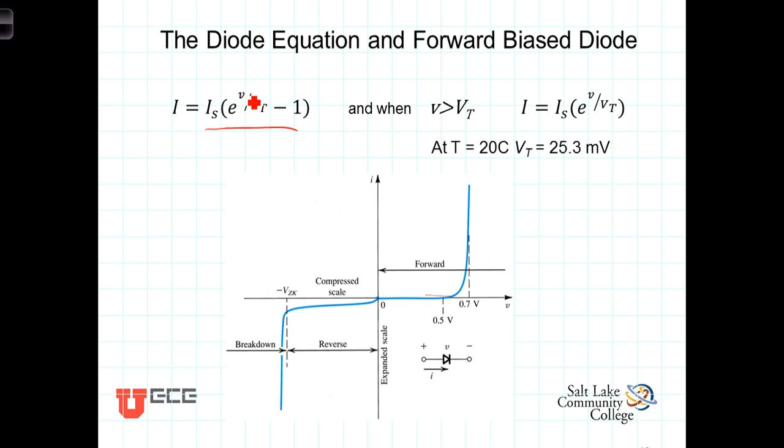In this equation, we know the exponential dependency of the current on the voltage. We know that V sub T, the thermal voltage, is a function of temperature and that at 20 degrees centigrade, V sub T is approximately 25 millivolts.